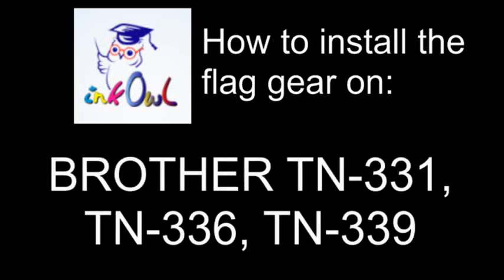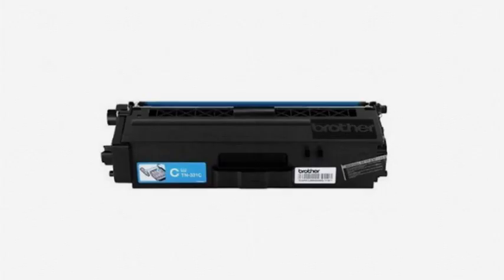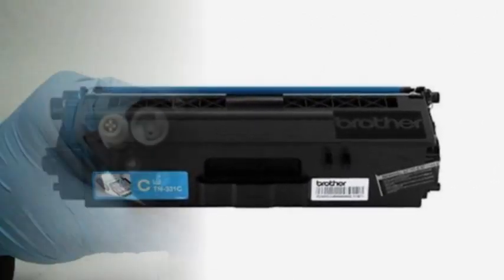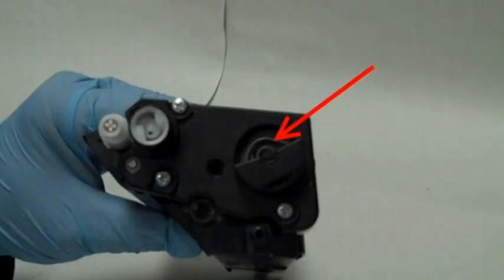This is how to install the flag gear on a Brother TN-331, TN-336, or TN-339 series starter cartridge. The TN-331, 336, 339 series uses a flag gear which tells the printer if the cartridge is new.